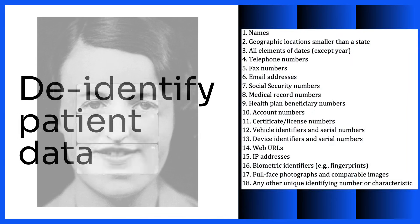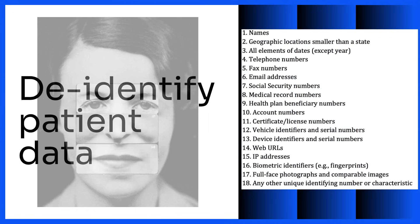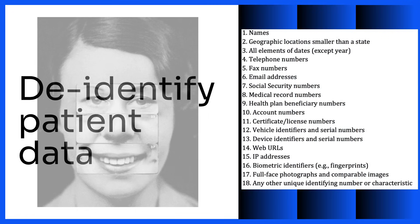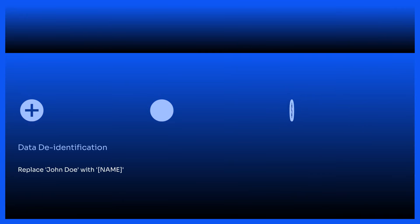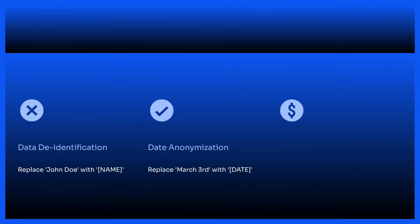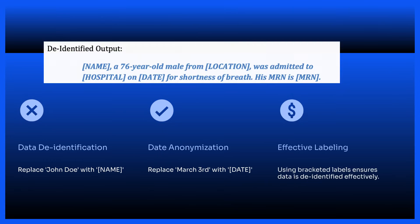To de-identify patient data, remove all 18 HIPAA identifiers. These include names, dates, contact info, and more. For example, replace 'John Doe' with [NAME] and 'March 3rd' with a placeholder like 'Hojimwa8'. Using bracketed labels ensures data is de-identified effectively.